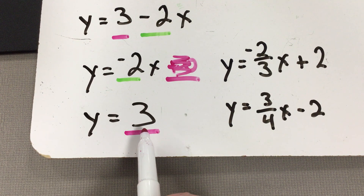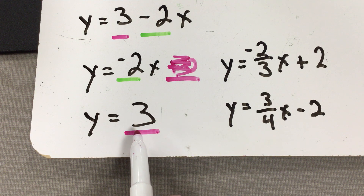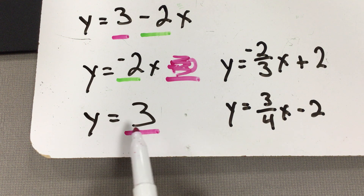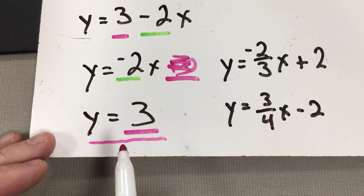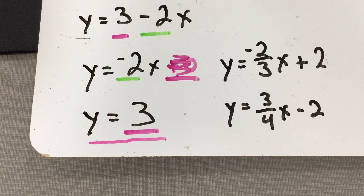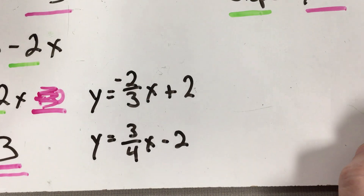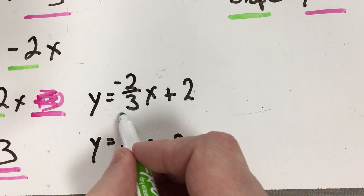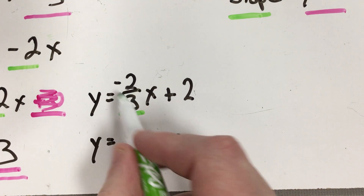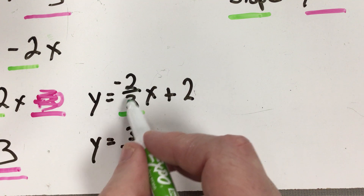Now if there's no x in the equation, the only piece of information you have is the y-intercept, because there's no x attached to it. If asked for the slope, you would say zero — there is no slope. This means the line goes straight across on the graph, because a slope of zero means it's not going up or down, it's going straight across. Every once in a while you'll have fractions, and that's okay — everything still works the same.